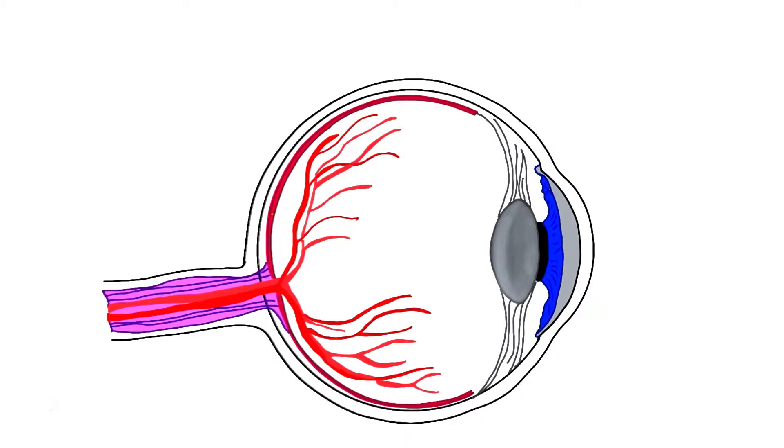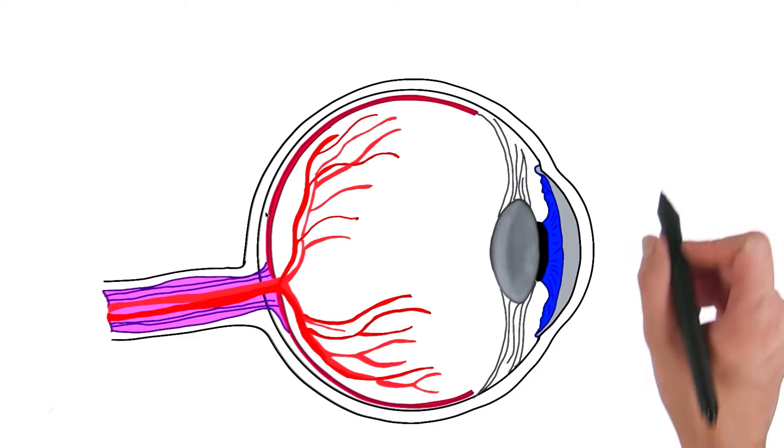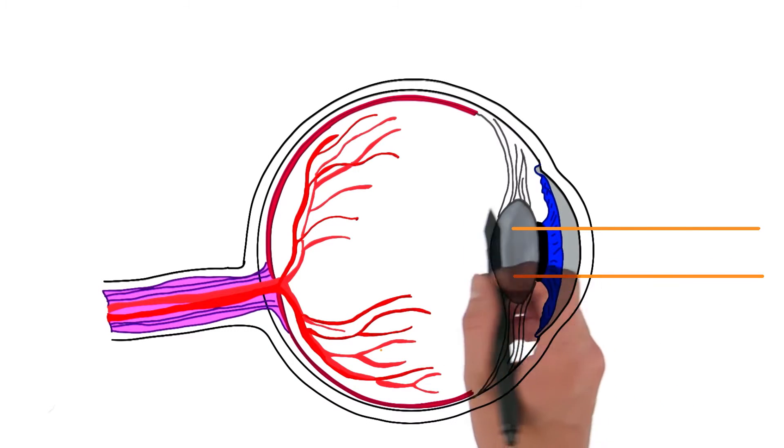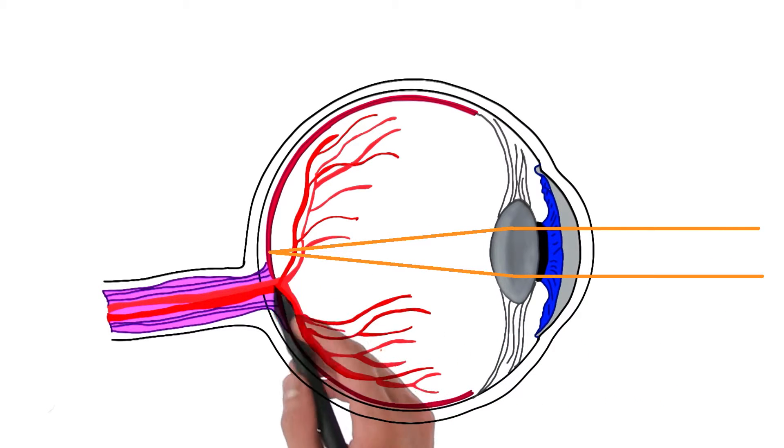Is it kind of how a magnifying glass focuses light? Yeah, sort of. A properly functioning eye with good vision will take light that enters, and bend that light, or focus it, onto the back of the eye here, which is called the retina.